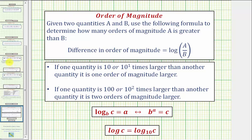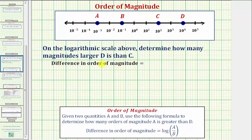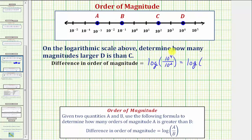So going back to our example, the difference in the order of magnitude is going to be equal to the common log of the value of d divided by the value of c. The value of d is ten to the fourth and the value of c is ten to the second. Let's simplify this quotient. The bases are the same and we're dividing, so we subtract the exponents. This is equal to the common log of ten raised to the power of four minus two, which is two — so ten squared.